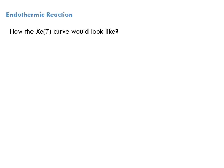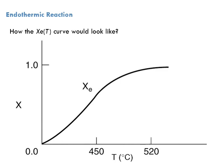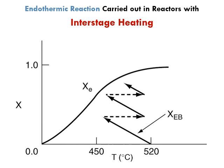Now let's look at an endothermic reaction. For an endothermic reaction, as you increase the temperature the equilibrium conversion increases, because supplying more heat shifts the equilibrium forward. When operating adiabatically with an endothermic reaction, as the reaction progresses and conversion increases, the temperature drops — which decreases the equilibrium conversion. So in this case, we need interstage heating: heat up the mixture between stages, then send it into another stage, heat up again, and so on.